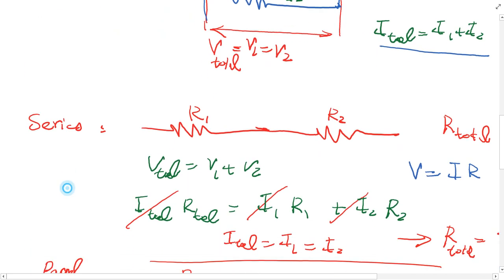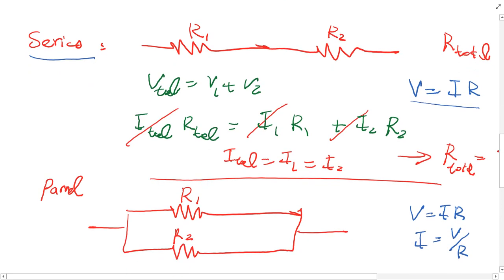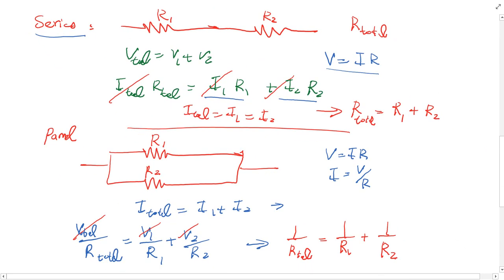Now let's do some calculation. If the resistors are in series like R1 and R2, you can say V total equals V1 plus V2. Using Ohm's Law and replacing V with IR, you get I·R_total equals I1·R1 plus I2·R2. Because we know I total equals I1 equals I2, you can summarize: R total equals R1 plus R2.